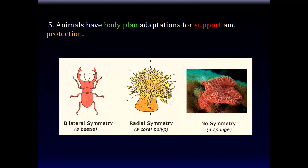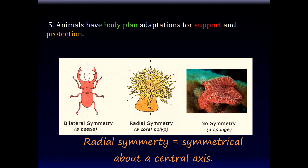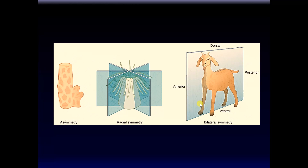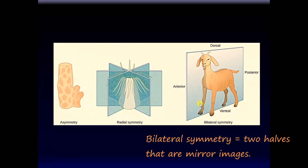The fifth characteristic of animals is that they have a body plan. Their bodies have evolved into shapes that support and protect them — this gives them a survival advantage. Animals can be classified broadly into those that have bilateral symmetry, where the body can be divided into two mirror-image halves like ourselves and this beetle, or animals that have radial symmetry, symmetrical on all sides. A coral polyp is radially symmetrical, sponges are asymmetrical, and corals are radially symmetrical.